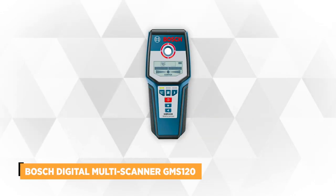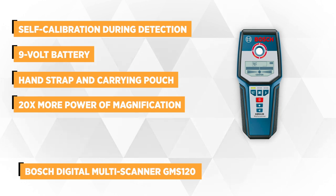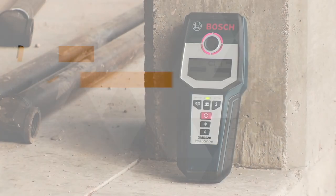At number four is the Bosch Digital Multiscanner GMS120. It's a versatile tool that can detect wood studs, metal objects, and live wiring in floors and walls. Sized at 10.25 inches by 3 inches by 6.5 inches with an accuracy rate of 0.0625, the scanner has three selection modes.